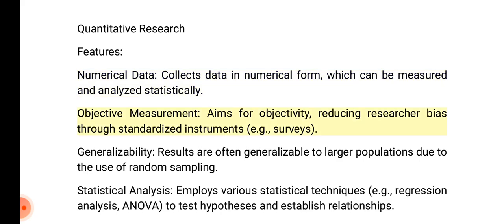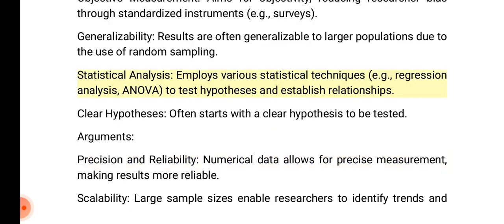Objective measurement: aims for objectivity, reducing researcher bias through standardized instruments such as surveys. Generalizability: results are often generalizable to larger populations due to the use of random sampling. Statistical analysis: employs various statistical techniques such as regression analysis and ANOVA to test hypotheses and establish relationships. Clear hypotheses: often starts with a clear hypothesis to be tested.